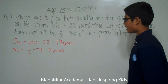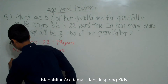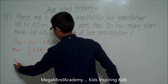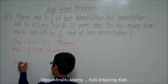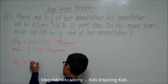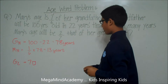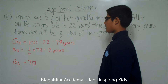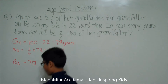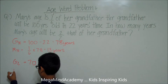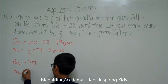This means that in some years, her grandfather will be seven units old. So grandfather's age later, G for grandfather, is equal to seven units. We can also see that this fraction has a numerator of two. This means that in the same amount of time, Mary will be two units old. So Mary's age later, M for Mary, is equal to two units.